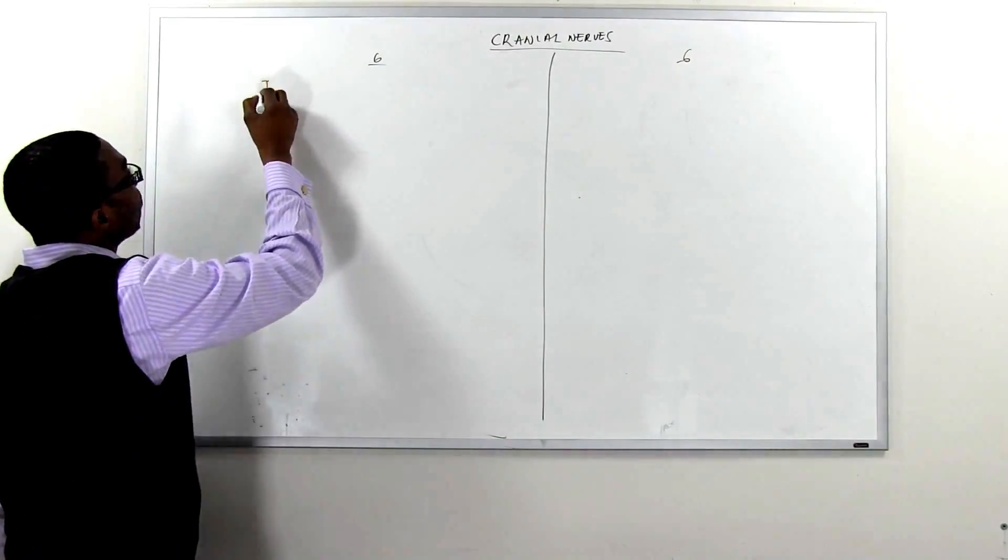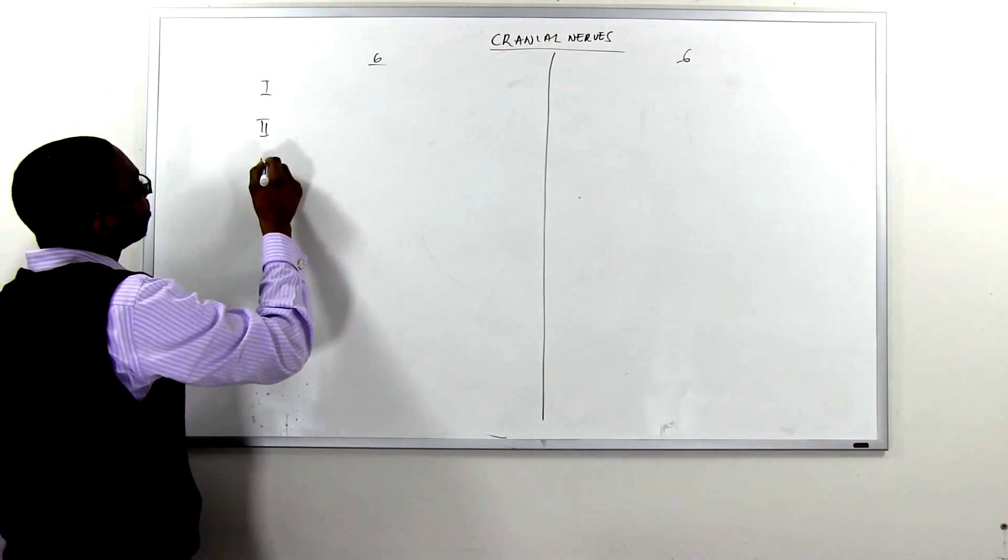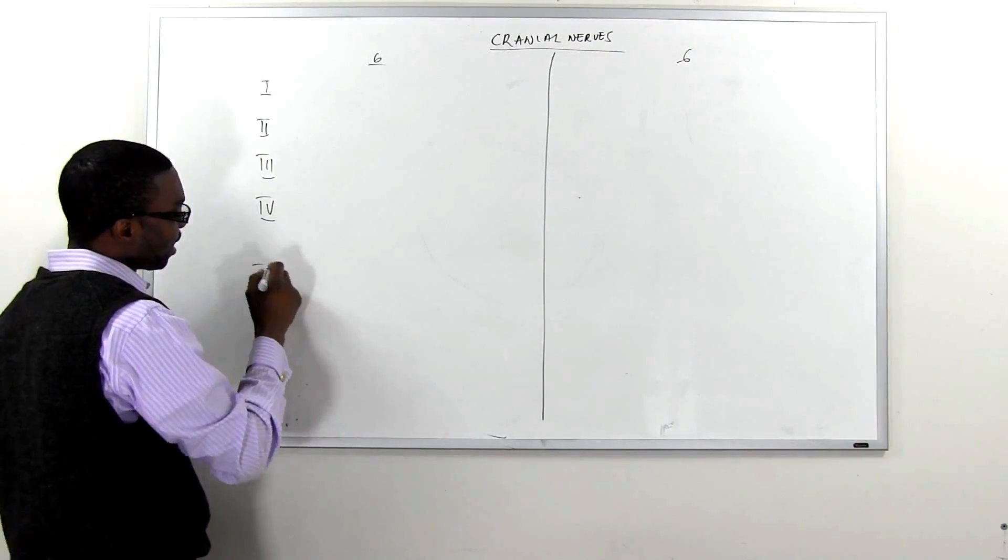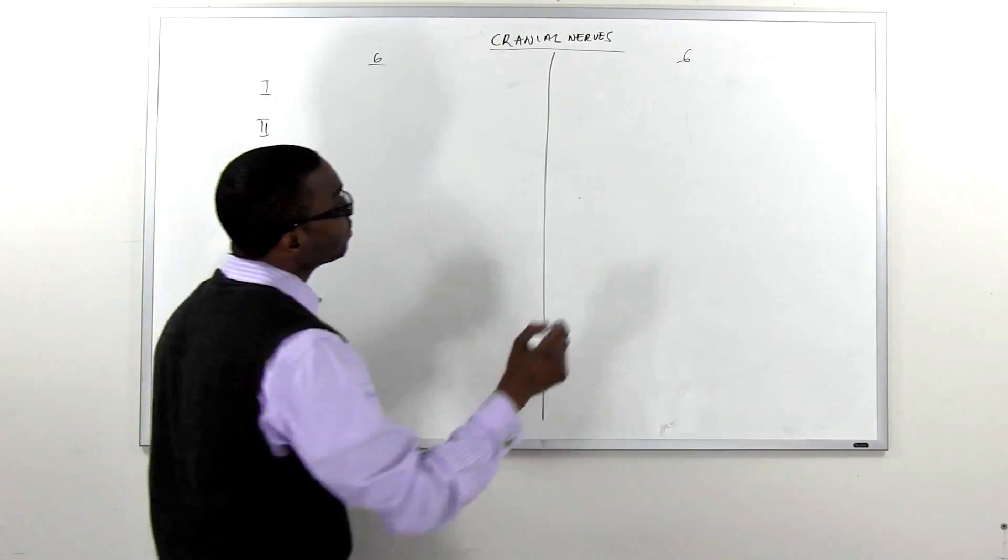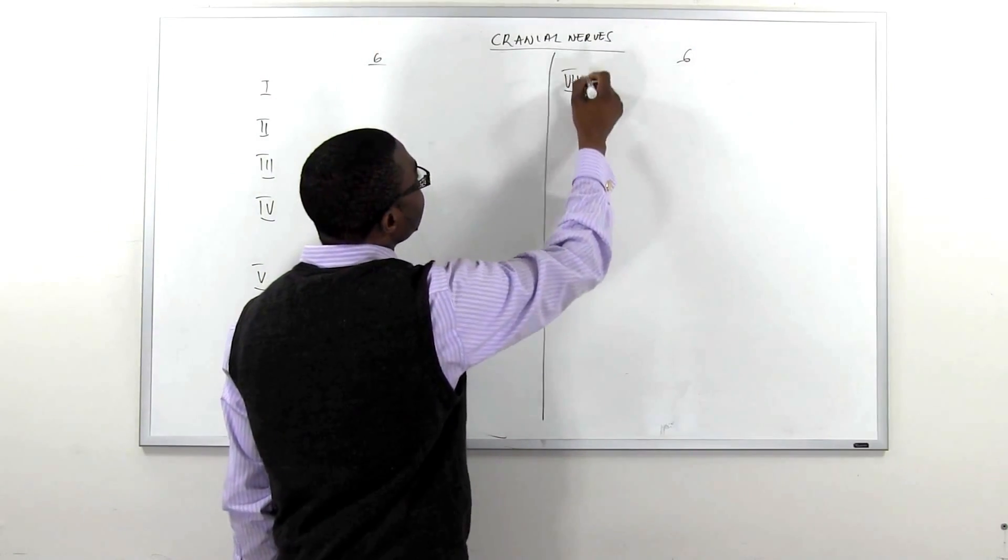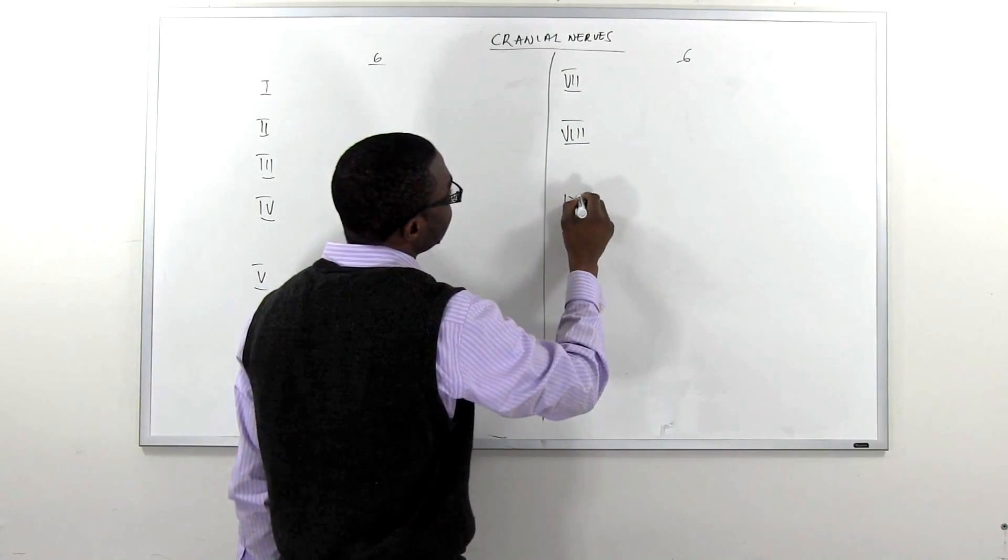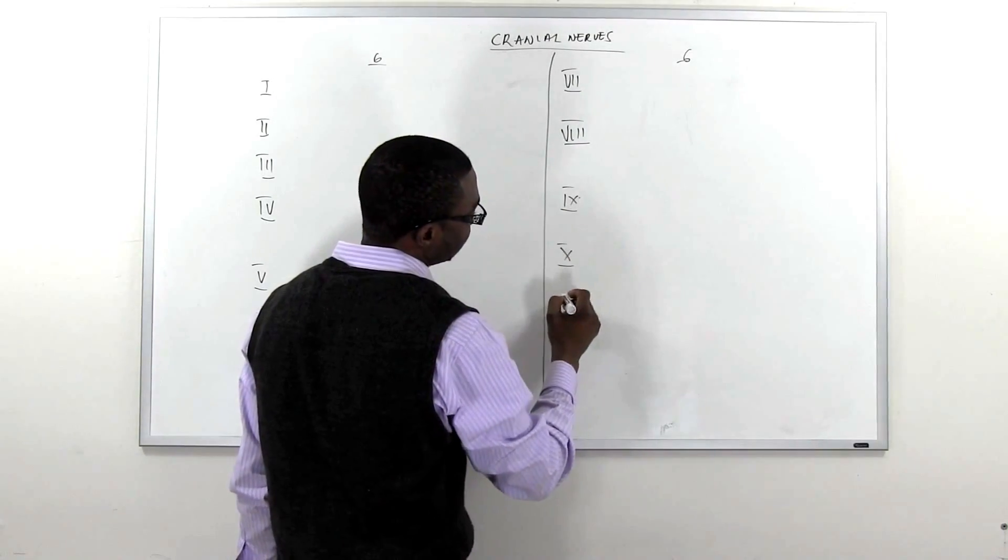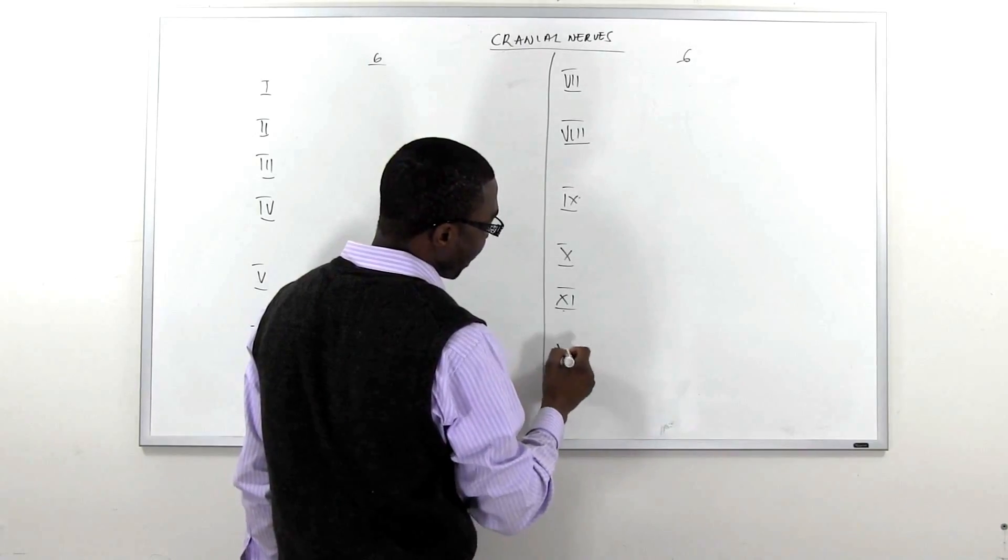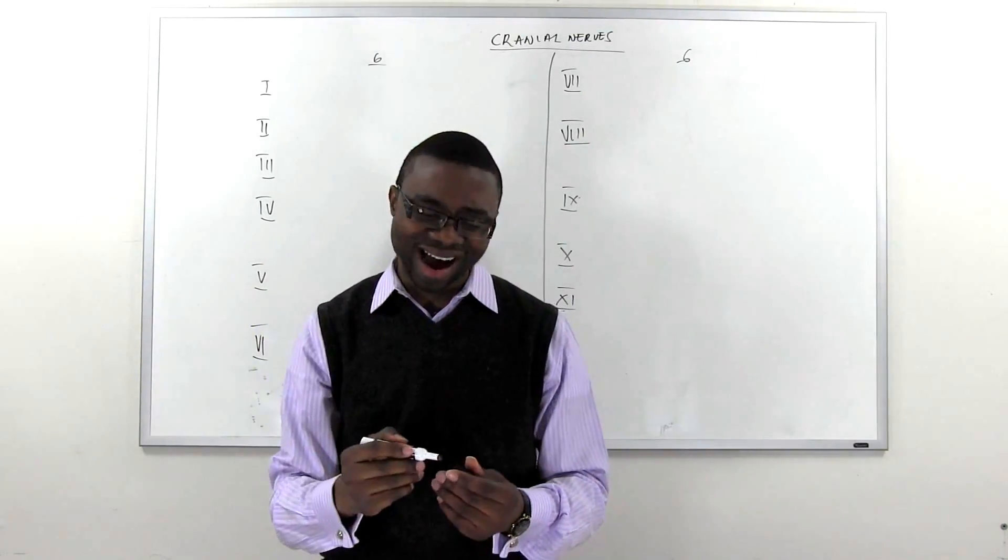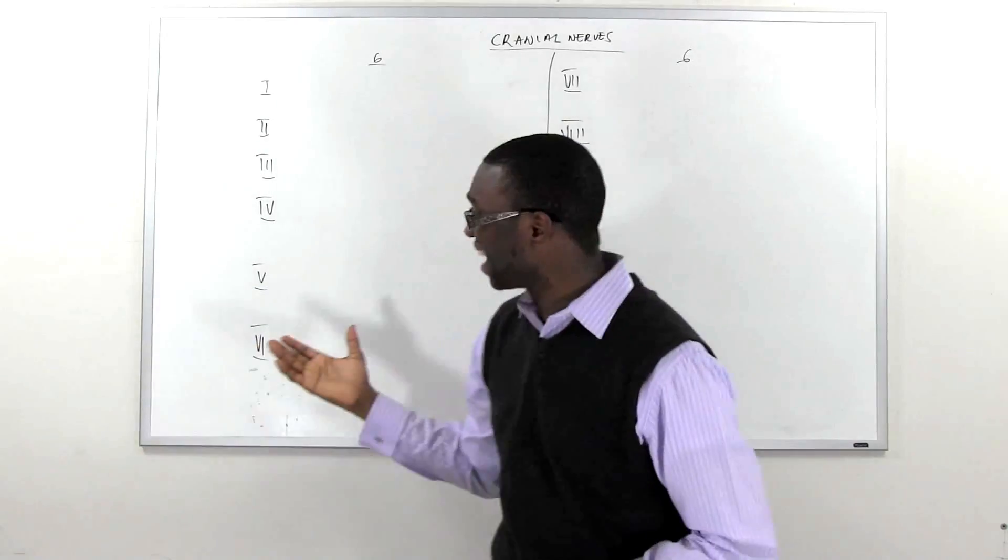All right, so now we know there are 12 cranial nerves, correct? There's 12 of them. So since there are 12 of them, we're gonna have to put a mnemonic on the board. So I'm gonna bring this board into six. So the first six is gonna be here and the second six is gonna be here.